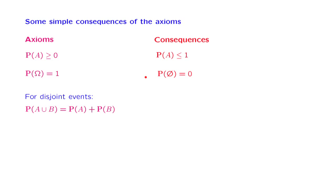We also have another intuitive property. The probability that an event happens plus the probability that the event does not happen exhaust all possibilities, and these two probabilities together should add to 1. For instance, if the probability of heads is 0.6, then the probability of tails should be 0.4.